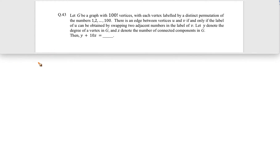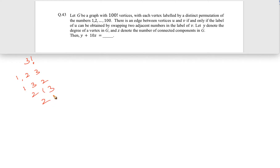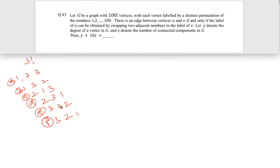Let's start with a smaller number. Say we are talking about numbers 1 to 3, so we have 3 factorial vertices. Each vertex is labeled by a distinct permutation of 1 to 3. So the permutations are: 1 2 3, 1 3 2, 2 1 3, 2 3 1, 3 1 2, 3 2 1 — that's six vertices total.